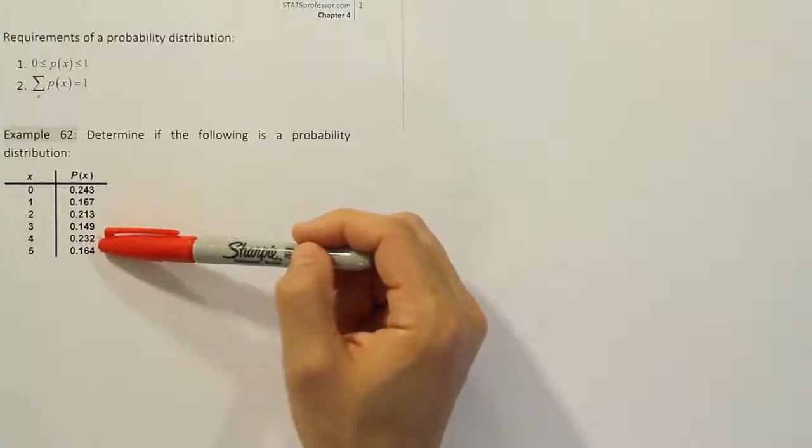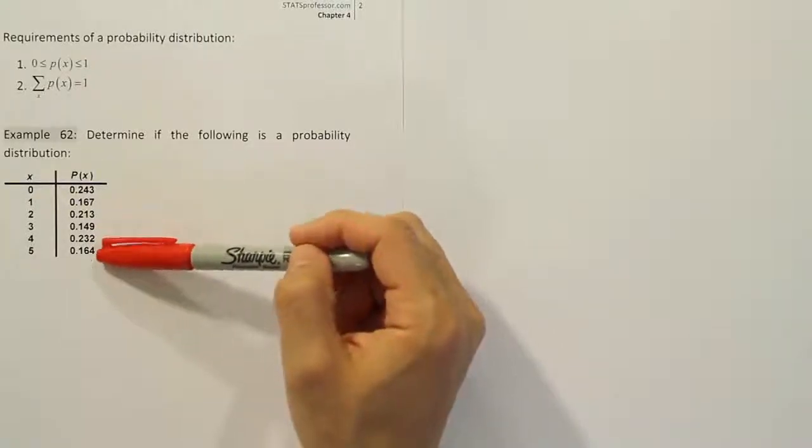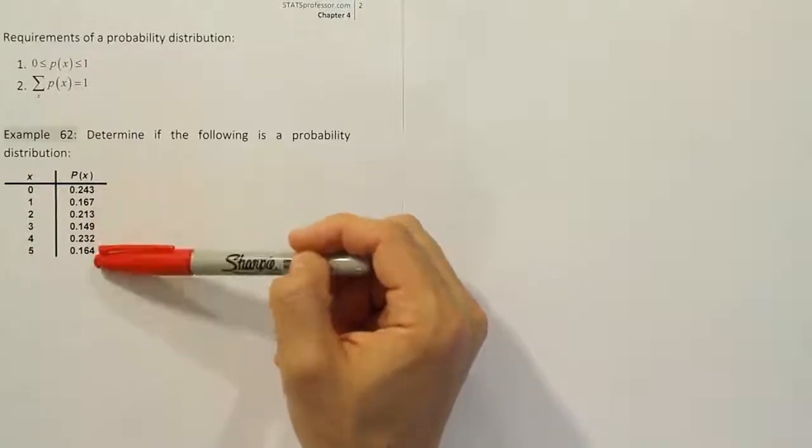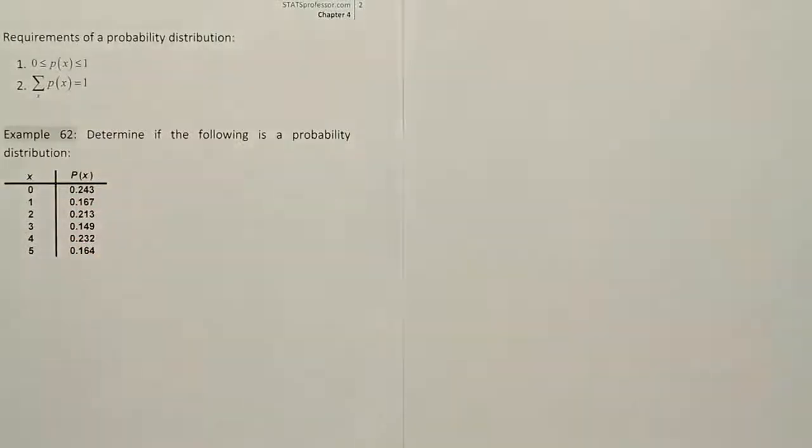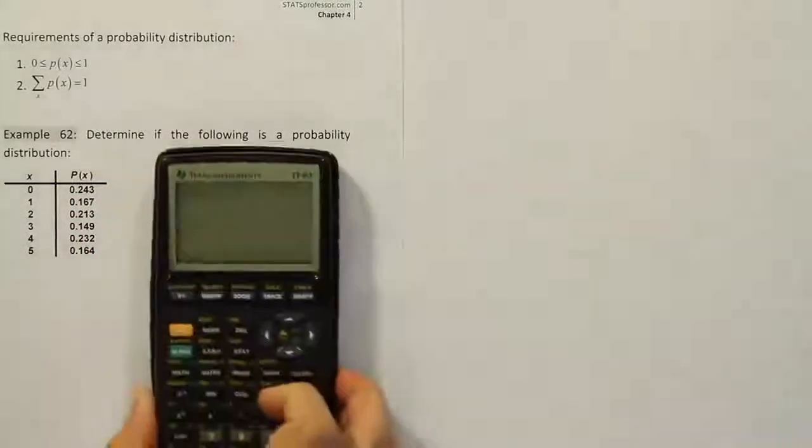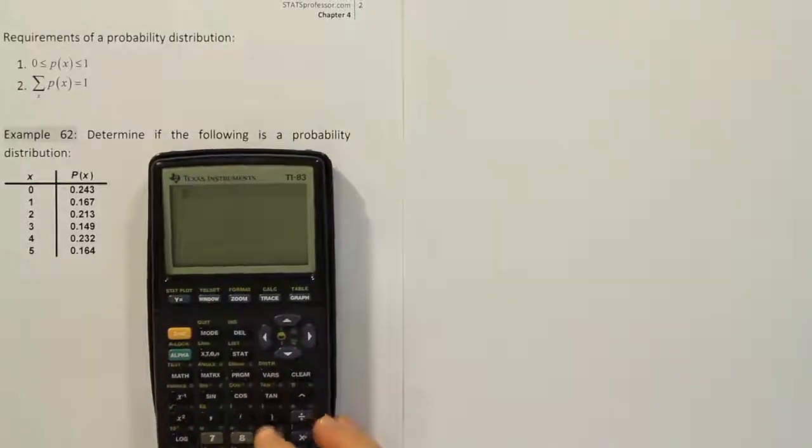Now at 76, that means we roughly should have 24% left. Now 23.2 and 16 certainly add up to more than 24. So if you sum this with your calculator, you will see that it's over 1. So this means it's not a probability distribution. If you want to be certain, just type them in.